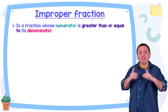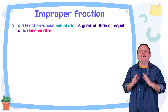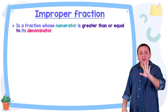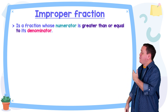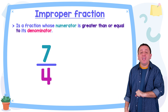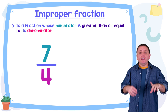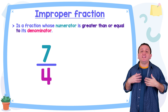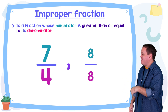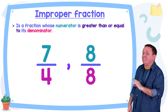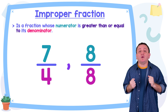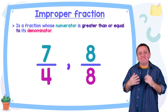An improper fraction is a fraction whose numerator is greater than or equal to its denominator. For example, the fraction seven fourths is an improper fraction given that the numerator seven is greater than the denominator four. The fraction eight eighths is also an improper fraction — the numerator eight is equal to the denominator eight.